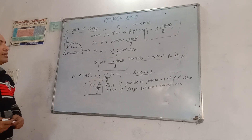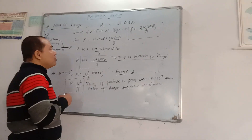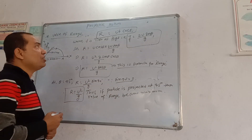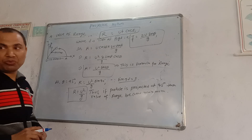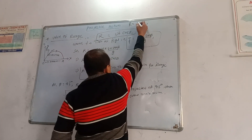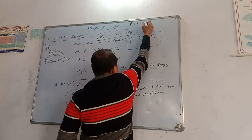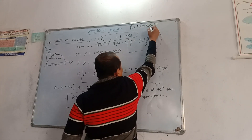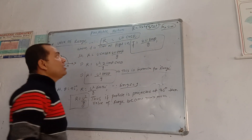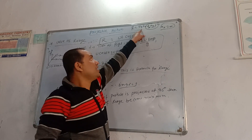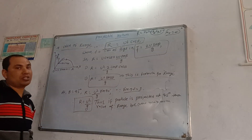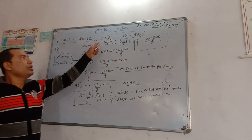We have to find the value of range. I have already taught you that R is equal to u·t·cos θ. In horizontal motion, the body moves with constant speed, so there is no acceleration. If we use S = u·t + ½·a·t², here Ax equals zero, so that term becomes zero, giving R = ux·t. Here ux equals u·cos θ, so the range formula is R = u·cos θ · t.